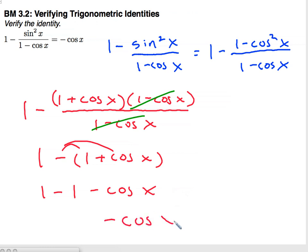The ones cancel, and I get negative cosine x equals negative cosine x. So I had two different strategies, but both were somewhat similar in that I got the 1 minus cosine x to cancel in the denominator, and also used the Pythagorean identity to replace the sine squared with a cosine squared. That's going to be one of our strategies. Thanks for tuning in, and we'll see you next time.